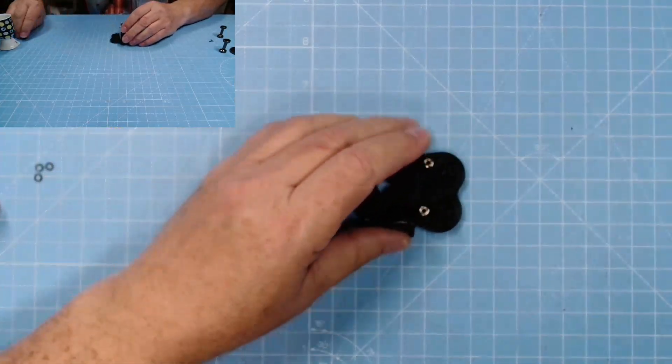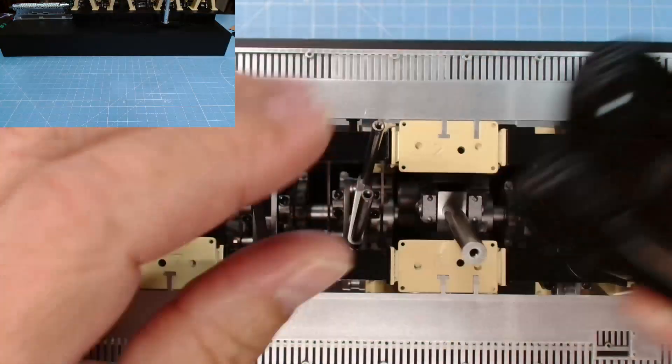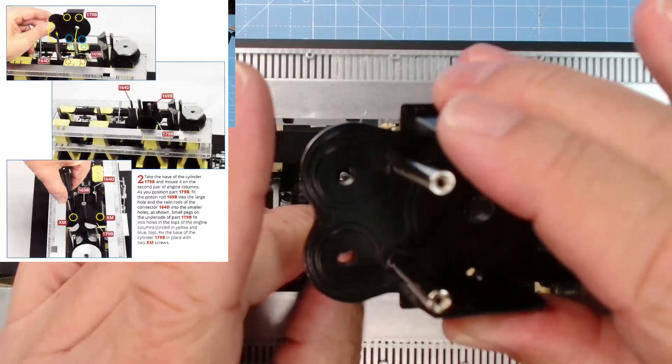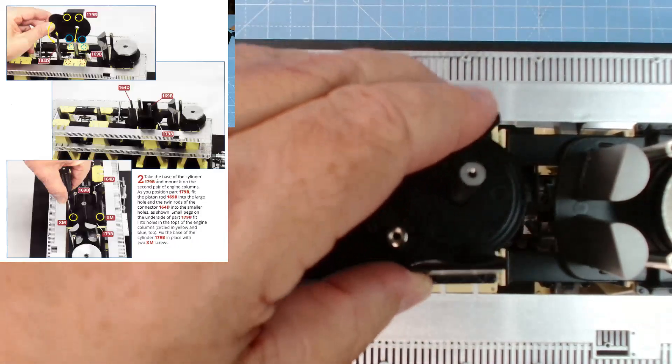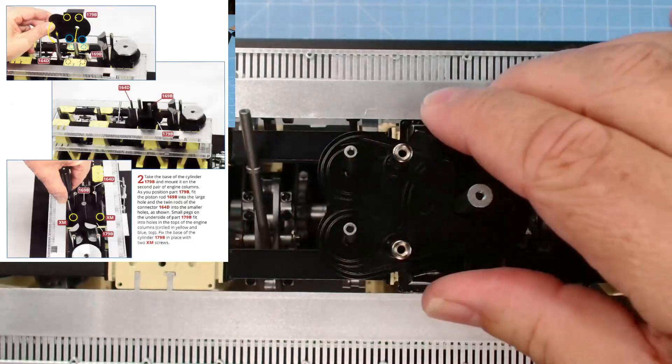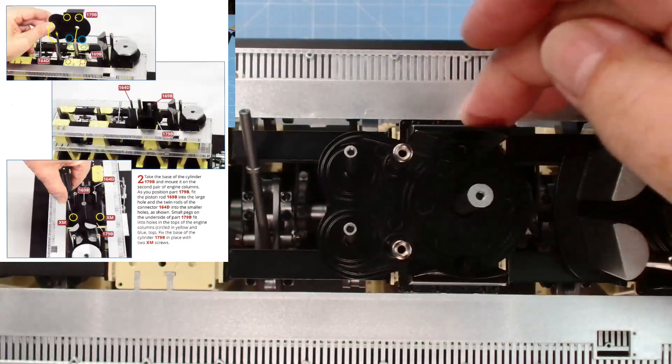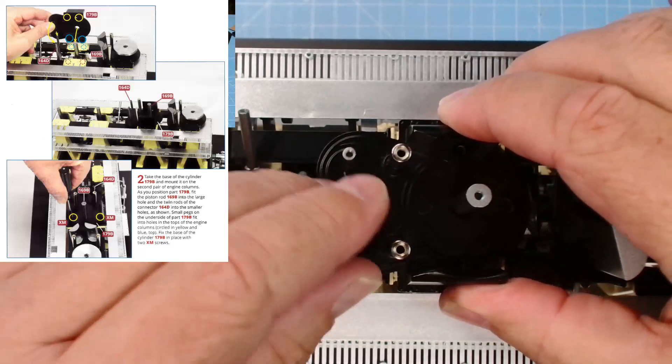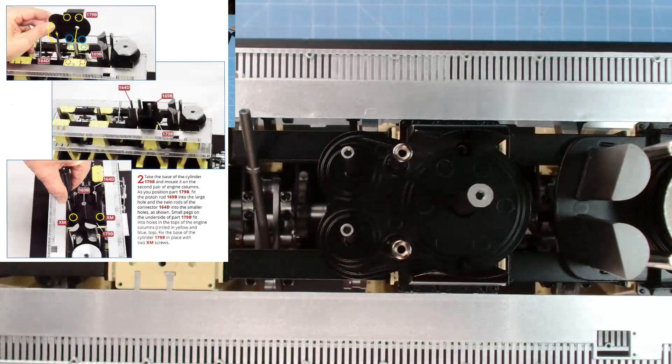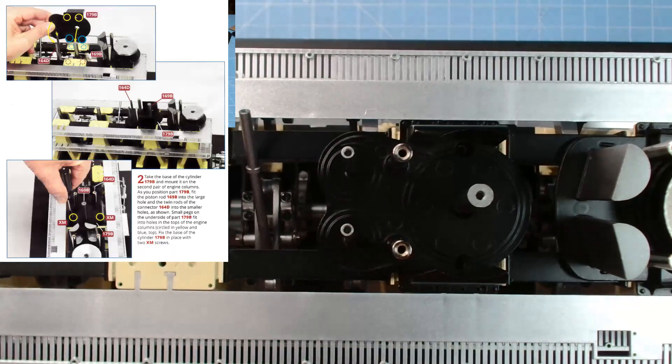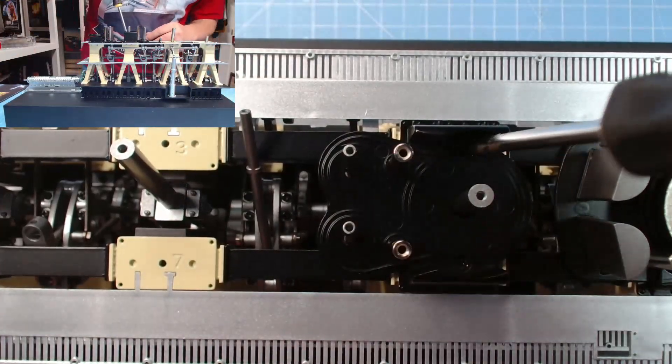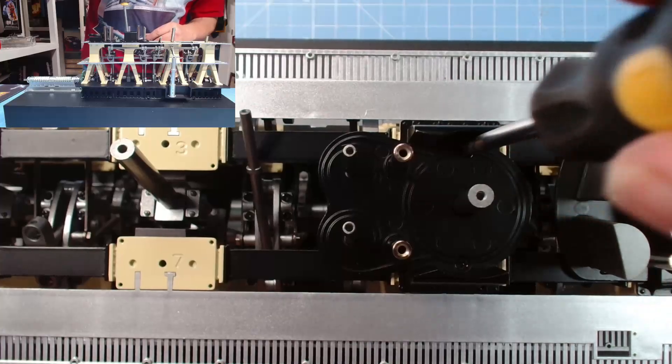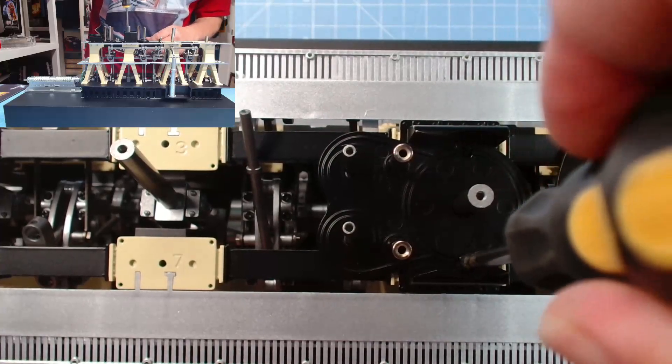Now position the engine. We need to pop this piece with the two columns on, like that. It positions itself with four lugs on that base. Let's keep that firmly in place. Now we need two XM screws to keep that in place.